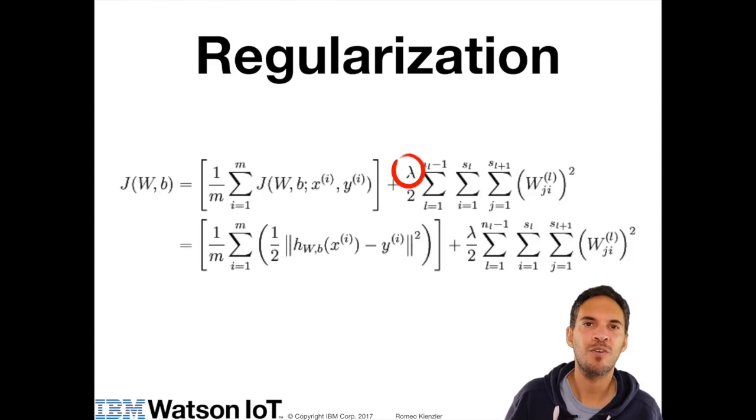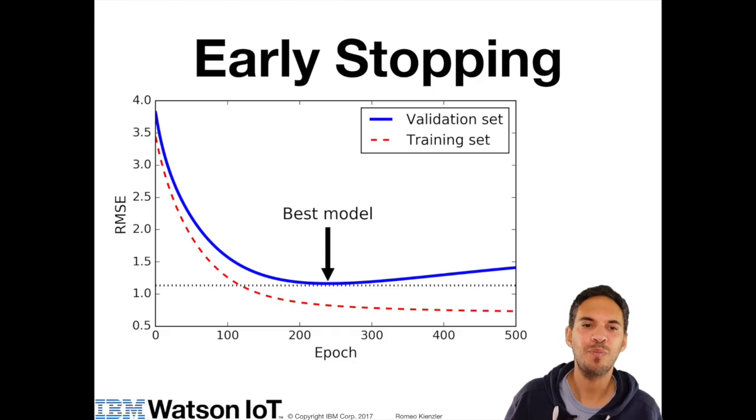Another way of addressing this problem is so-called early stopping. Early stopping means you don't train until you get full convergence of the training set. You stop somewhere in the middle.